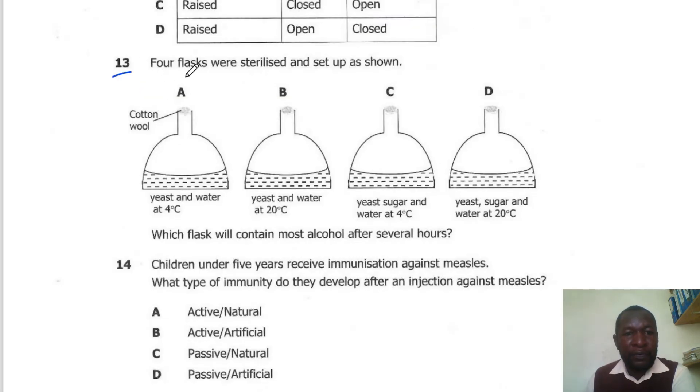Question 13. Four flasks are sterilized and set up as shown. Which flask will contain the most alcohol after several hours? To produce the most alcohol, you need the yeast, sugar and the higher temperature. So here the correct answer is D.